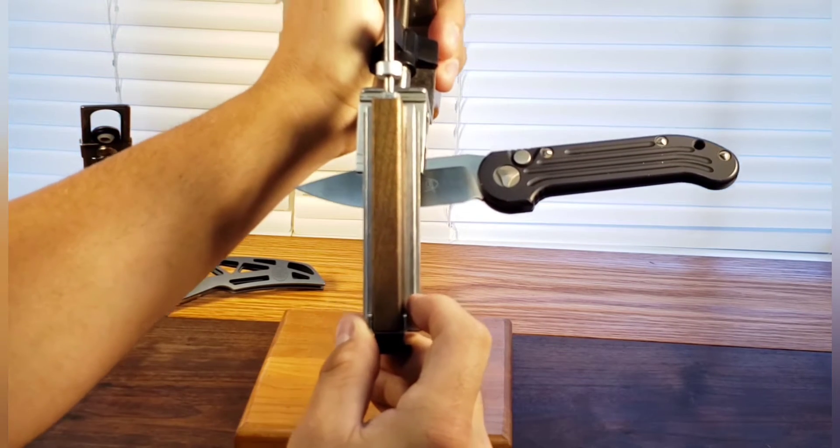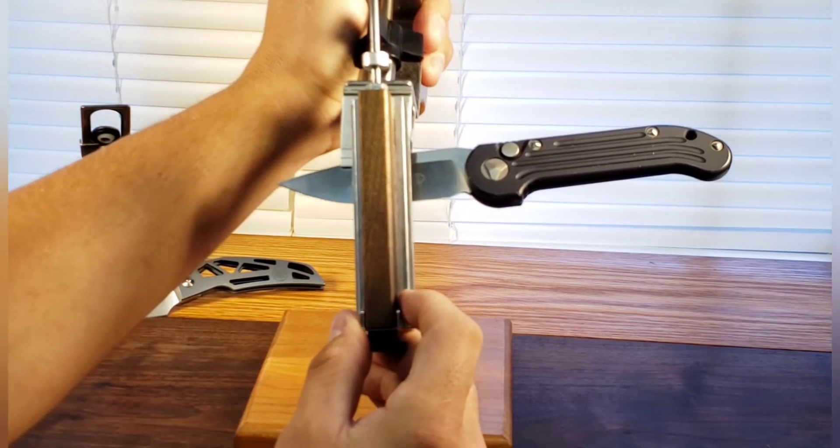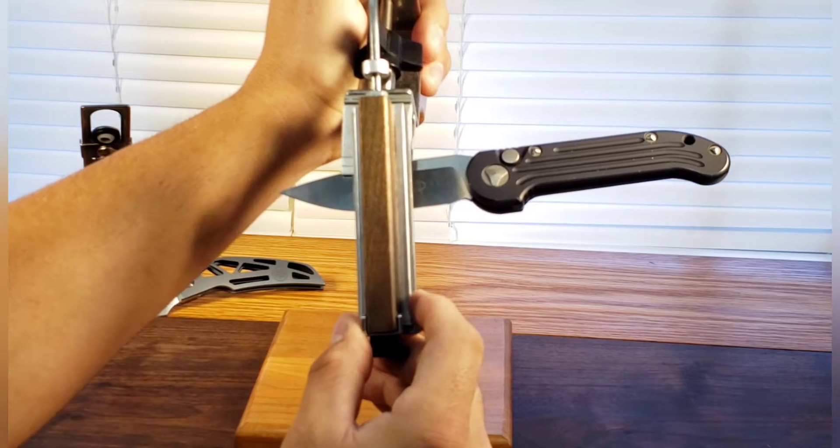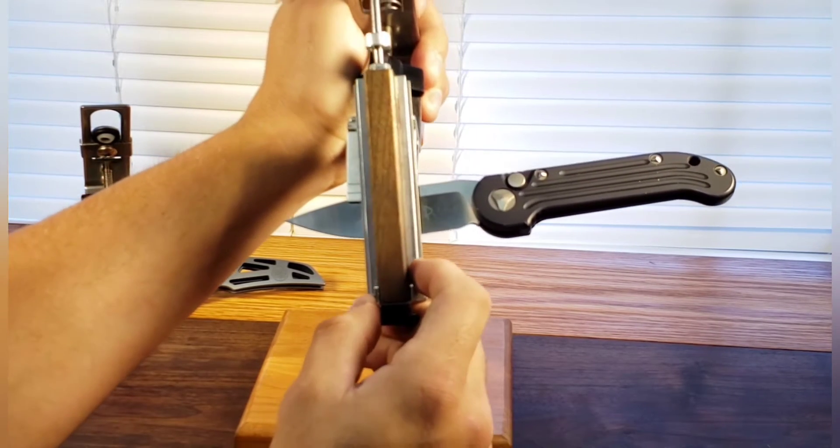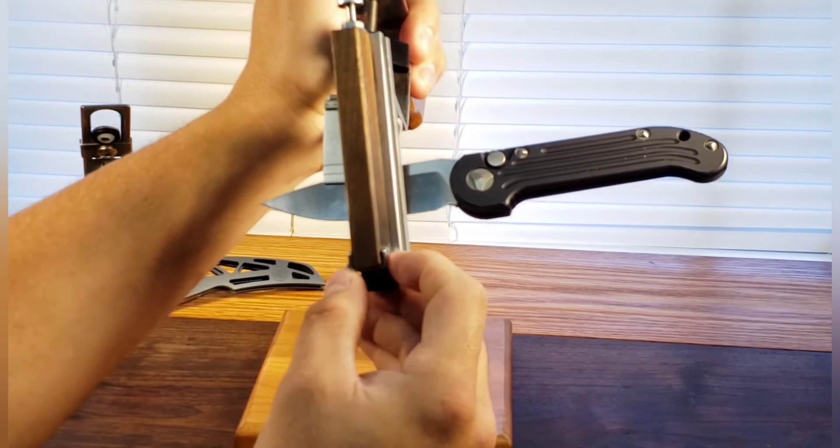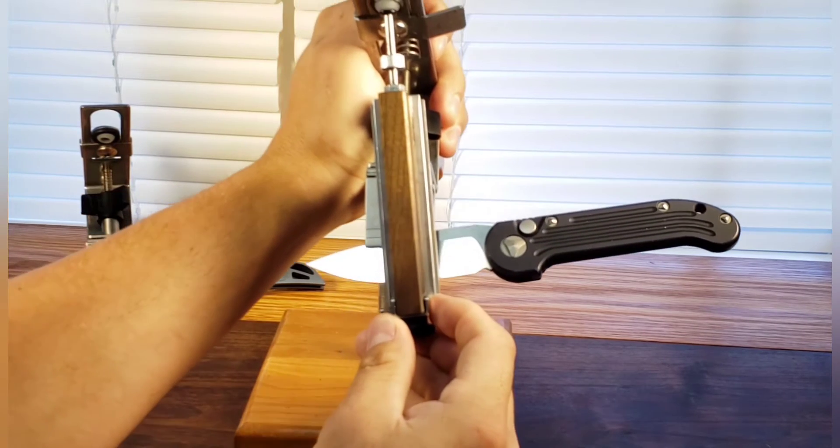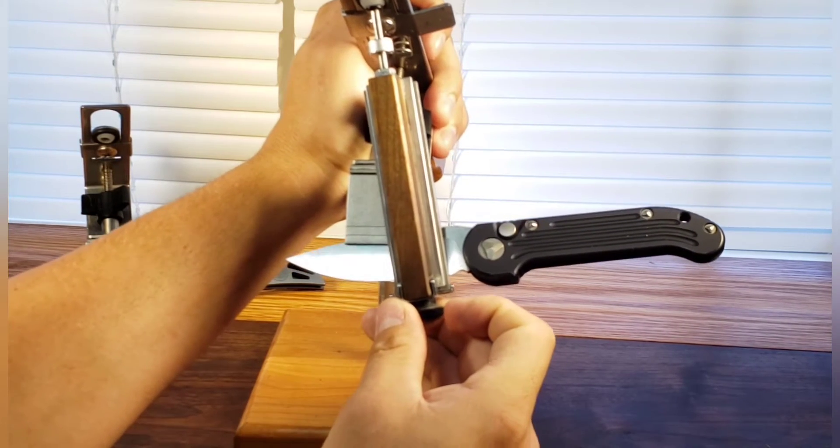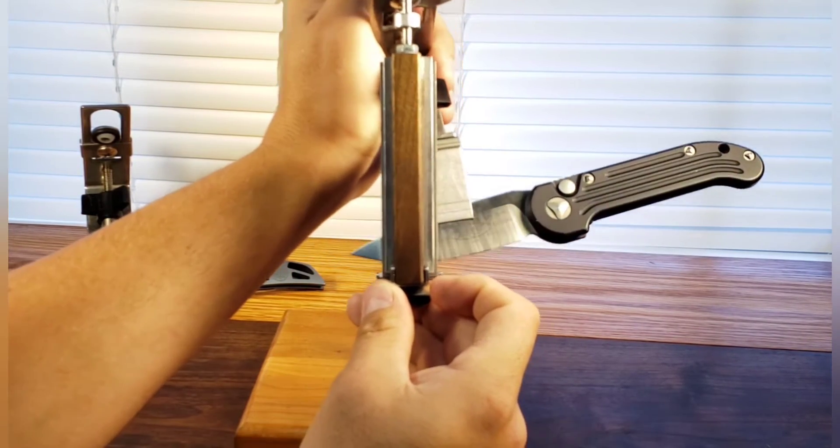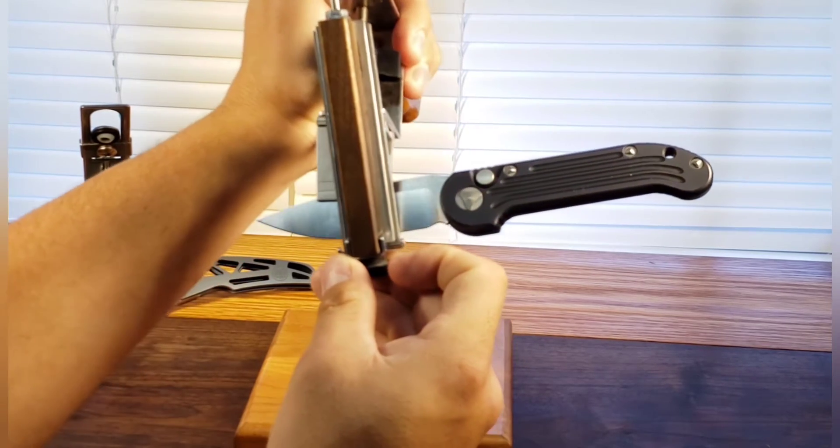That way your diamond stones wear more evenly, but also you don't want it to go in too far to where you're right up onto that side of that knife. So you'll slowly push it in like so and you'll just kind of check from heel to tip to make sure that you are good. Right about there is where I'm going to leave it for this knife.